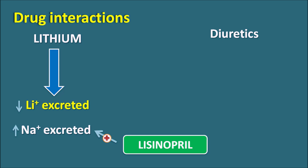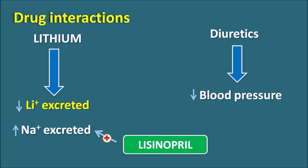Similarly, diuretics. Normally Lisinopril can be combined with diuretics like hydrochlorothiazide, but these diuretics can also reduce blood pressure. When this drug is given along with diuretics, a sudden fall in blood pressure can be observed. So when Lisinopril is given to patients already taking diuretics, Lisinopril should be administered after stopping the diuretics, and then slowly diuretics can be combined with Lisinopril after a few days, eliminating the risk of sudden hypotension and syncope.